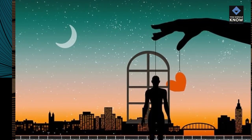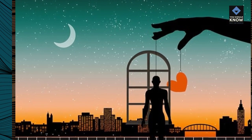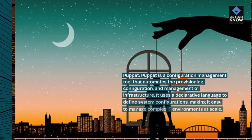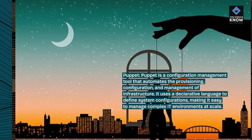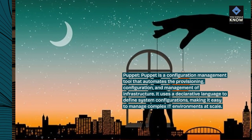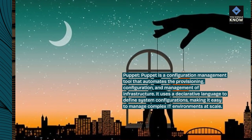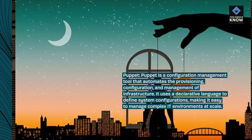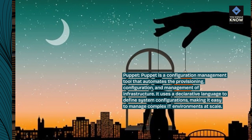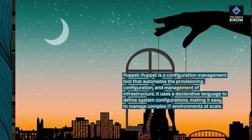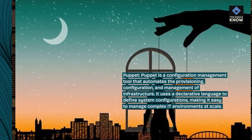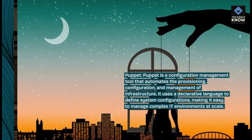Puppet is a configuration management tool that automates the provisioning, configuration, and management of infrastructure. It uses a declarative language to define system configurations, making it easy to manage complex IT environments at scale.